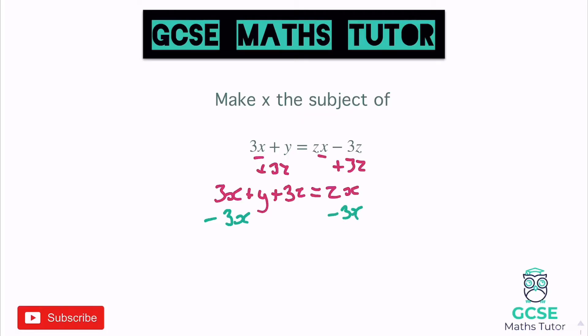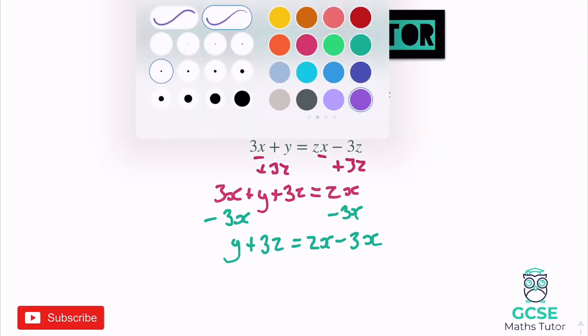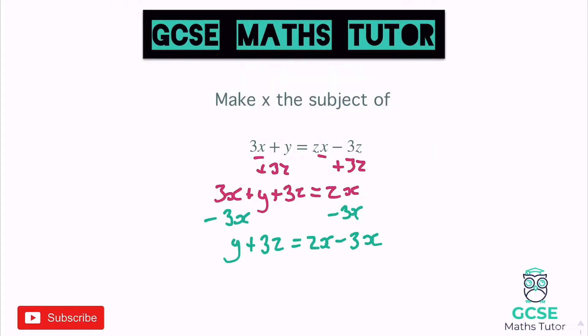Once we've done that, we're left with y plus 3z on the left, and that now equals zx minus 3x. Now all the x's are next to each other, we can do this final step — I can factorise this right-hand side. So if I factorise by x, taking an x out of the brackets, we've got y plus 3z on the left, and on the right we will get x brackets z minus 3.